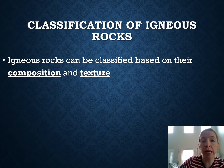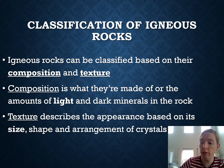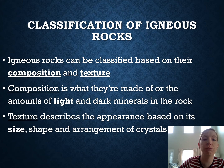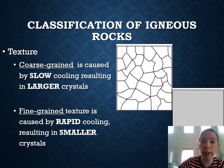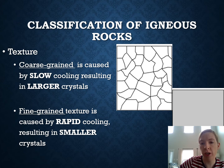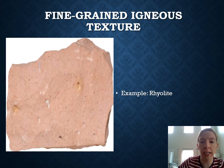We can classify igneous rocks based on their texture and composition. Minerals can be light or dark, and texture can be coarse, fine, glassy, or vesicular. Coarse-grained rock has visible crystals due to slow cooling. Fine-grained rock has a matte finish and you can't see individual crystals. For example, rhyolite has a fine-grain texture — very matte, not shiny, and you can't make out many crystals. Granite is a coarse-grained example.